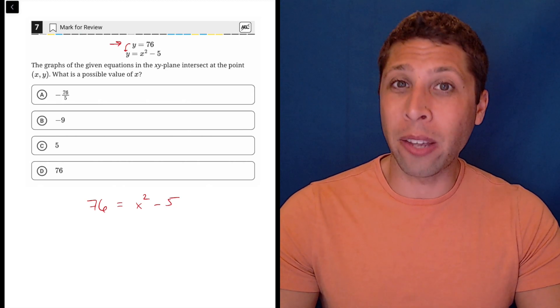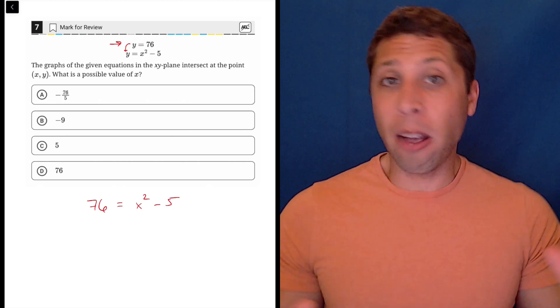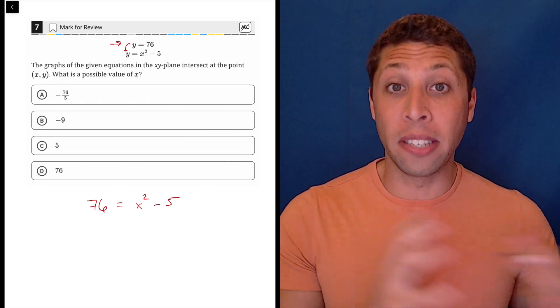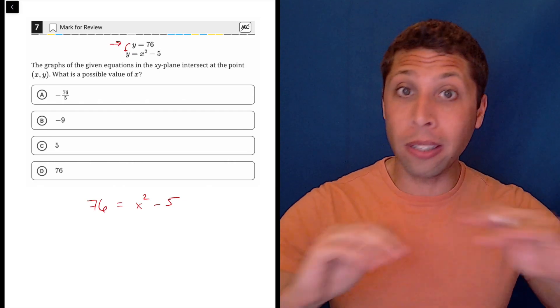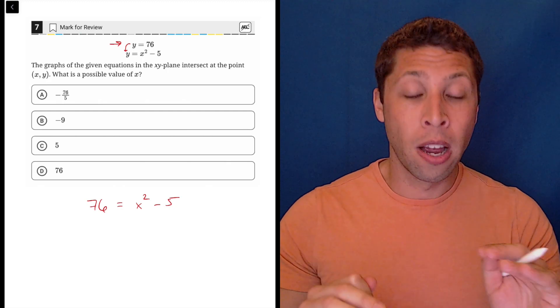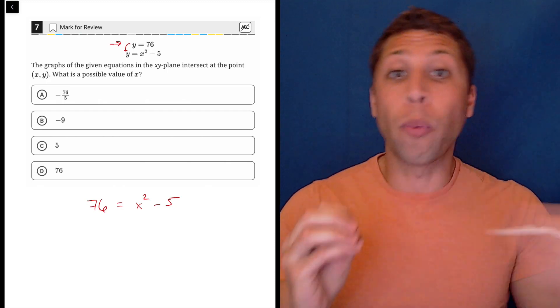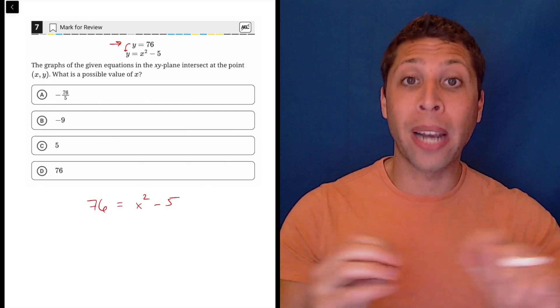Basically, the real thing that we should memorize is that anytime we have an X squared, we really want to get things equal to zero. So when we have normal linear algebra, no exponents, our move is actually to get everything away from the X. That's how you first learn algebra and that sticks with you.